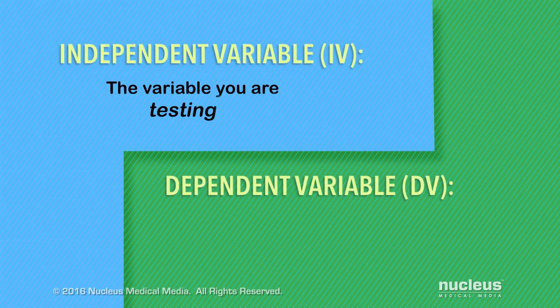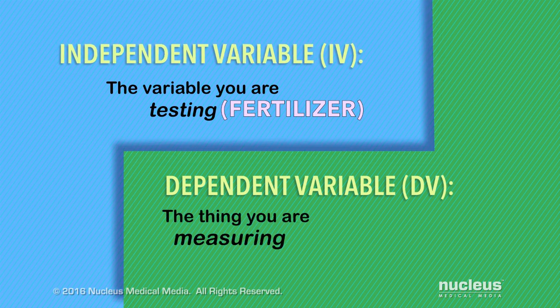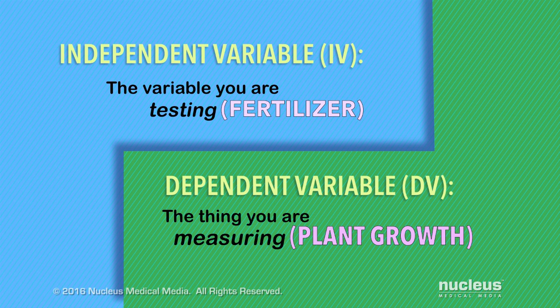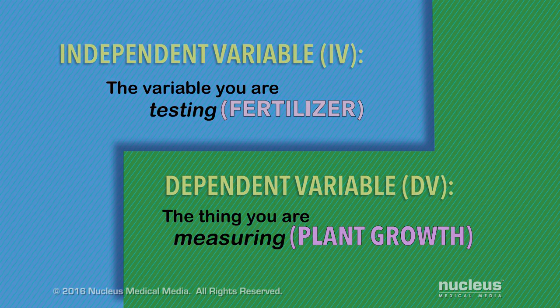The variable you were testing — in this case the fertilizer — is called the independent variable. And the thing you were observing, measuring, and expecting to change because of that independent variable was plant growth. In this experiment, plant growth is the dependent variable. We'll go over independent and dependent variables in more detail in another video.